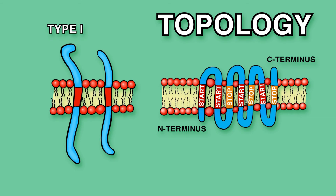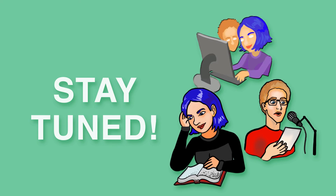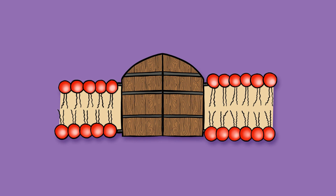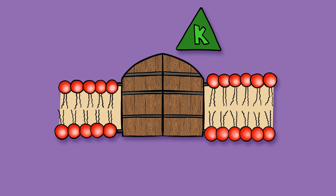For example, type 1 is a single transmembrane pass with the N terminus on the extracellular side of the membrane. Type 2 is also a single transmembrane pass, but the N terminus is on the cytosolic side of the membrane. How these different topologies come about will be the topic of another video. Often, transmembrane proteins function as gateways, allowing specific substances to pass across the membrane, and they can undergo conformational changes as they do this.